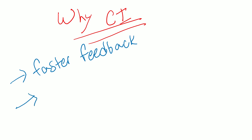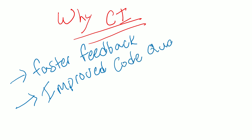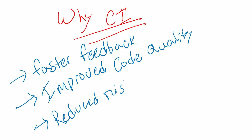We can also use CI for improved code quality. By regularly integrating and testing code changes, teams can also use CI to reduce risk. By testing code changes automatically, teams can reduce the risk of introducing defects into production systems, which can save time and resources in the long run.